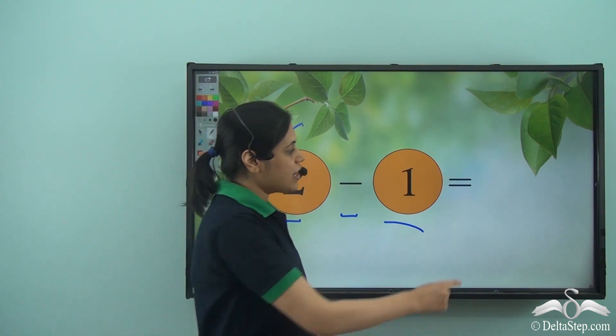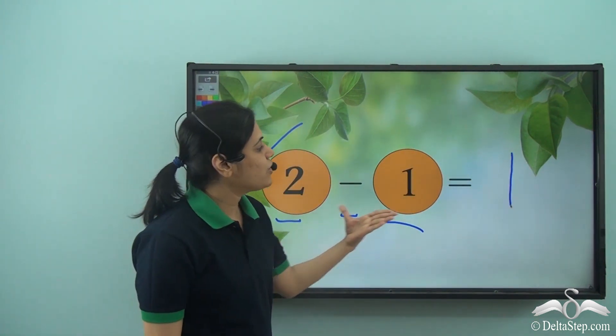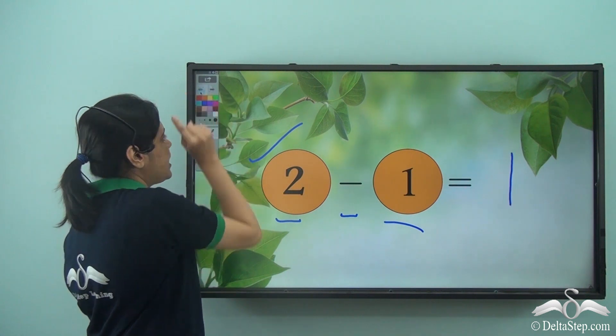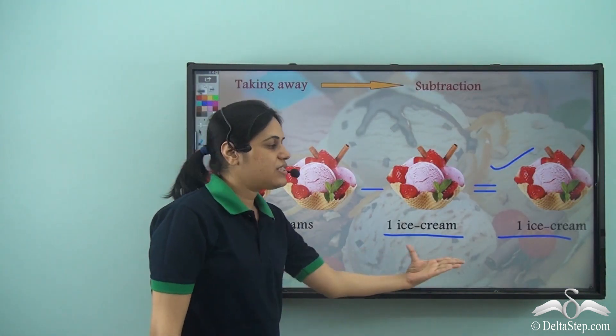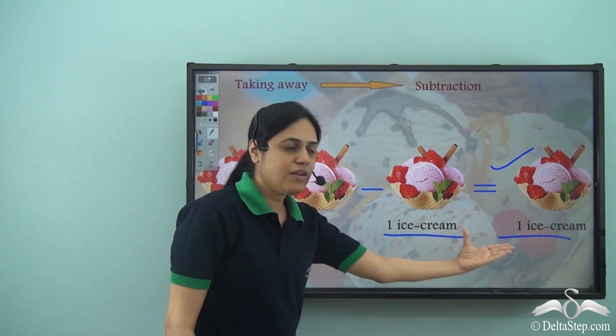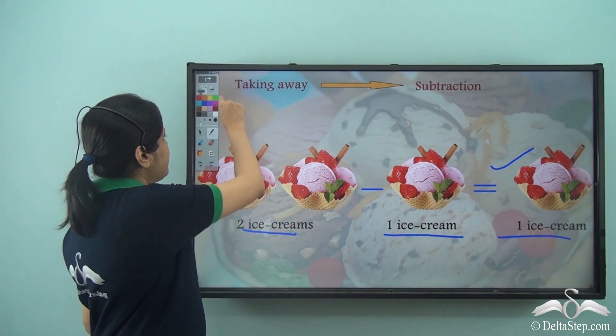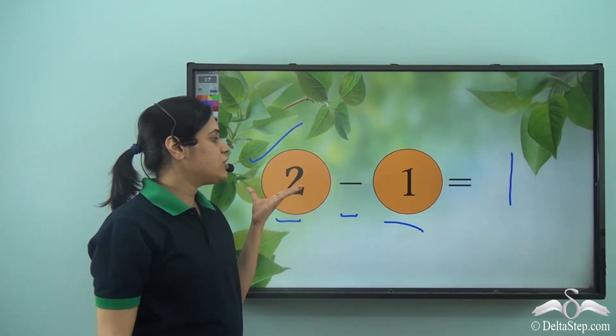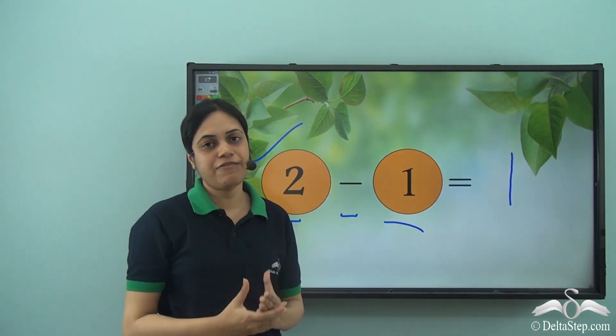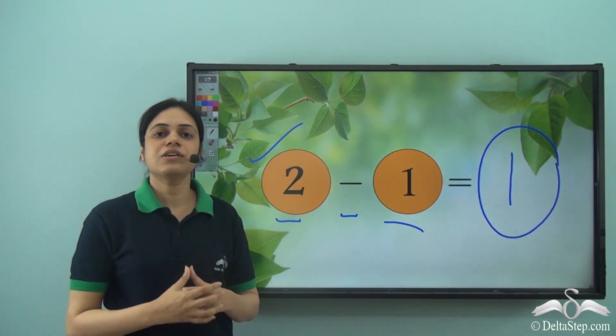Right? So the answer to this subtraction is one, and you can verify it is the same as the ice creams. So when I had two minus one, I got one in this case by counting objects. Once again when I am doing two minus one using my fingers, I am getting the same answer which is one.